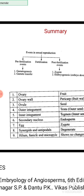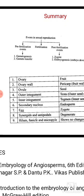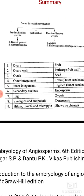In summary, the events in sexual reproduction are: pre-fertilization events — gametogenesis and gamete transfer; fertilization; and post-fertilization events. The ovary becomes the fruit; the ovary wall becomes the fruit wall, known as pericarp. The ovule gets converted into the seed. The outer integument forms the outer seed coat, that is testa. The inner integument becomes the inner seed coat, known as tegmen. The secondary nucleus becomes the endosperm. The egg becomes the zygote. Synergids and antipodals degenerate. The hilum, funicle, and micropyle show no changes.